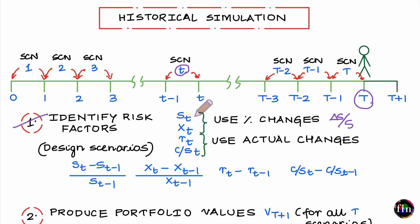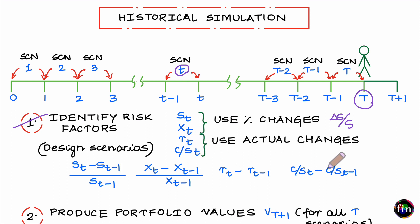Changes must be expressed as per the type of risk factor: in percentage form for equity and exchange rates, and in actual changes for interest rates and credit spreads. So the scenario for day t tells me the equity level changed by this percentage, the exchange rate by this percentage, and the interest rate and credit spread by these actual amounts. Collect these scenarios for all days from day 1 to day capital T.